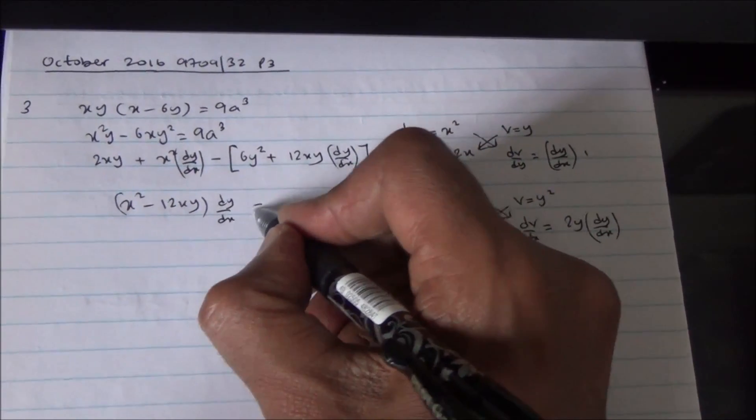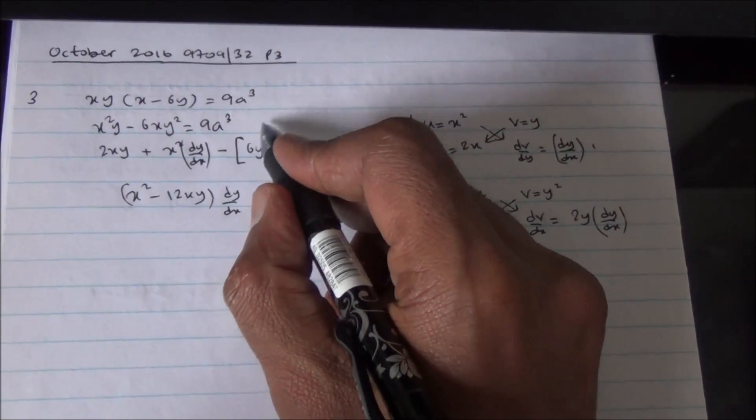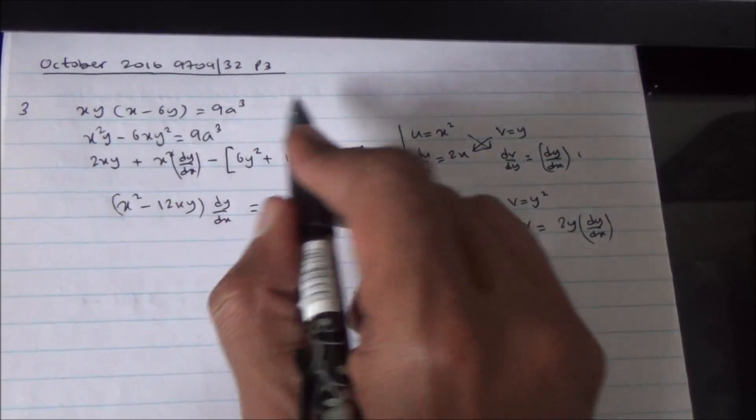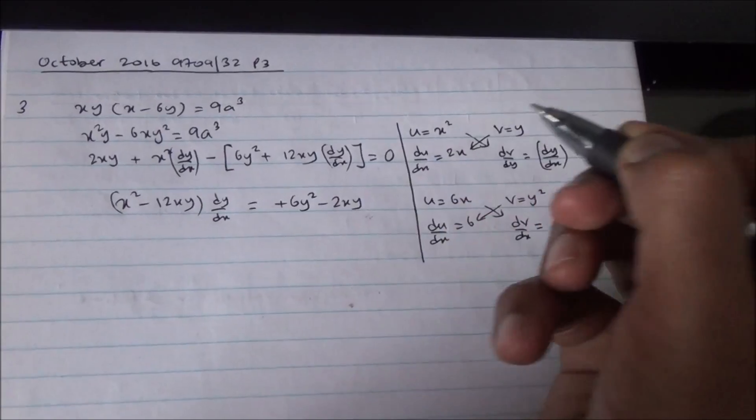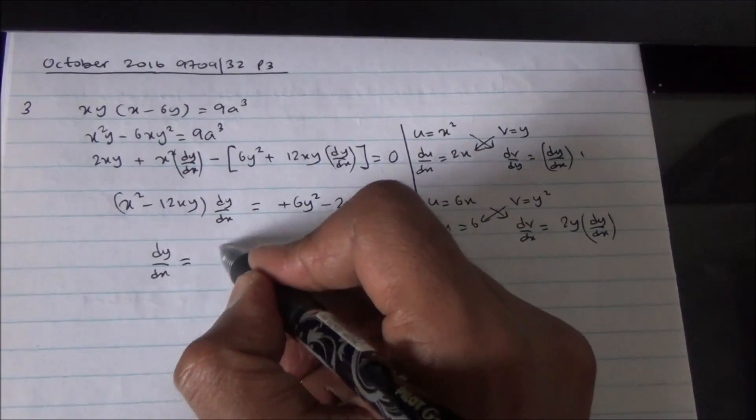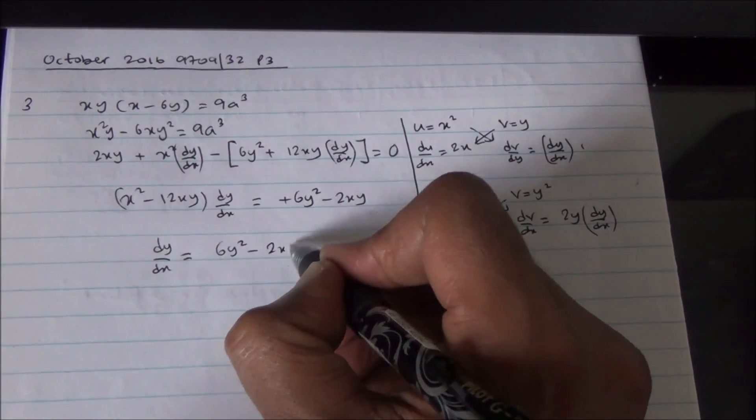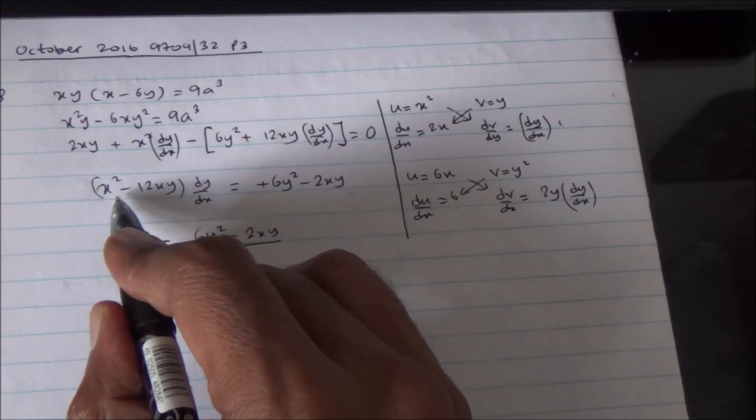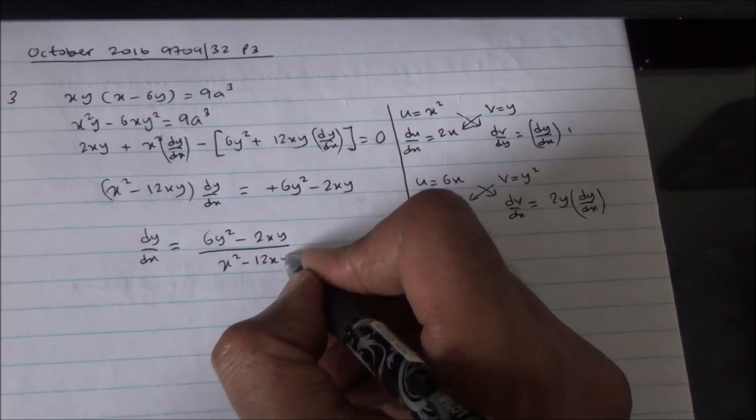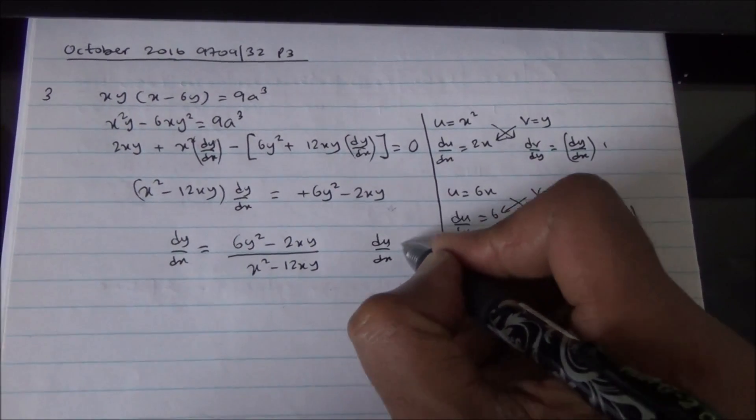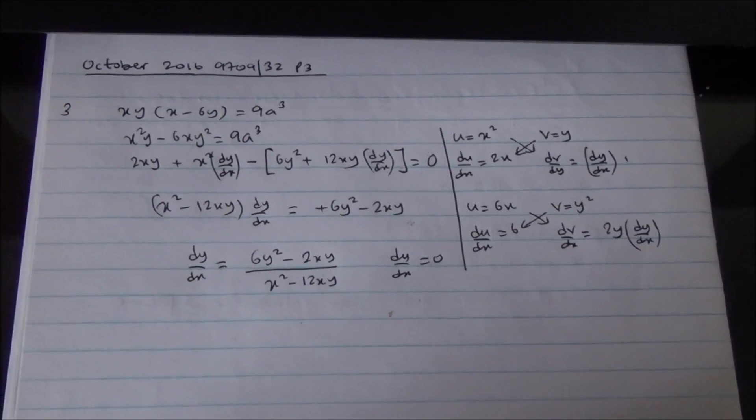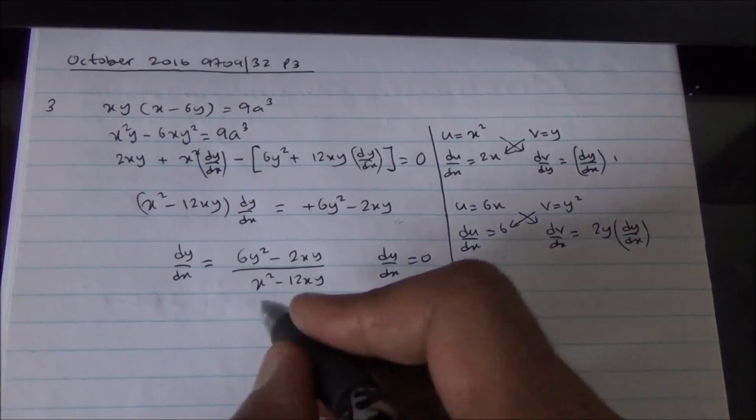It's going to equal to, this is minus 6y squared, when you send this on the other side, it becomes plus 6y squared. Now, clearly, dy by dx is going to equal to 6y squared minus 2xy, and all of it is going to be divided by x squared minus 12xy. We can equate dy by dx to 0, because we are told that the tangent is parallel to the x-axis, so the gradient is going to give us 0 at that point.